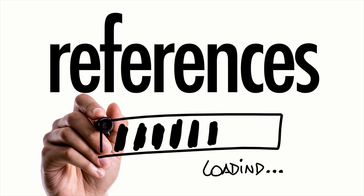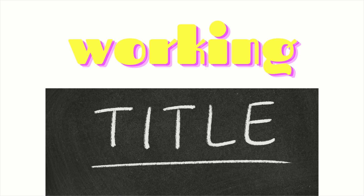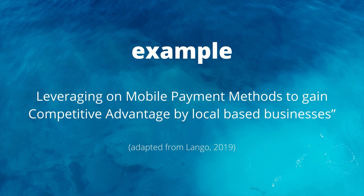Sixth, do not forget to provide the list of references of the cited works in your concept paper. Always remember to properly acknowledge the authors of the borrowed ideas you have used. The last step is to construct the working title of your concept paper. Although it is placed at the beginning, you can only construct the working title once you have finished all the aforementioned steps. It is called a working title because it is subject to revisions based on comments and corrective feedback from your professor. This is an example for the working title, adapted from LANGO 2019.